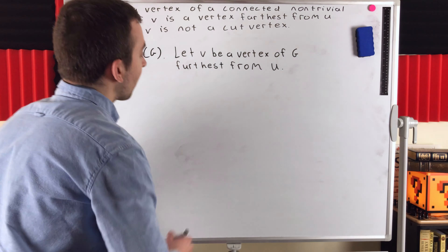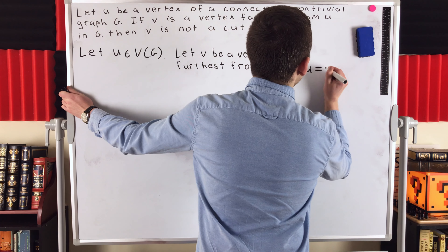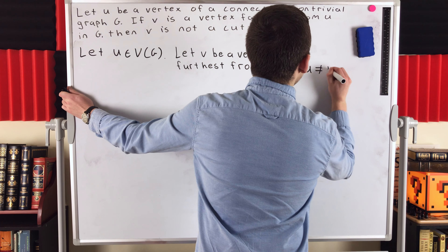There might be other vertices in g just as far away from u as v is, but there are no vertices further away from u than v is. Now an important thing to point out before we move on is that we know u is not equal to that vertex v furthest away from u. We know this because g is non-trivial and connected. So suppose this is our vertex u — since g is non-trivial, it must contain at least one other vertex. If u was not adjacent to any of those other vertices, the graph would be disconnected. But it's not; it's connected. So u must have at least one neighbor.